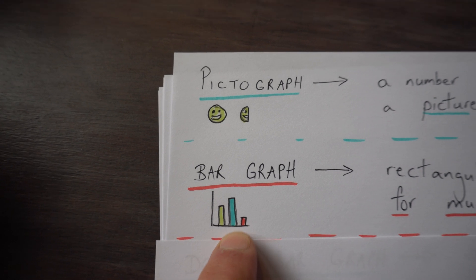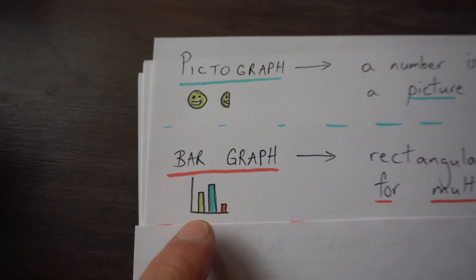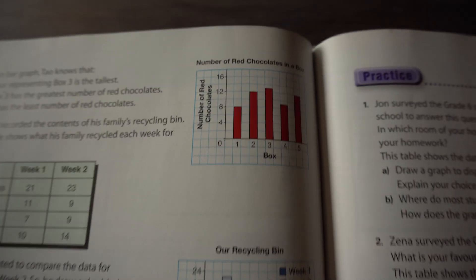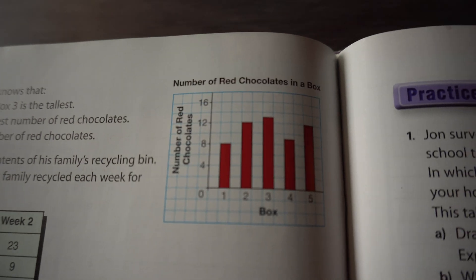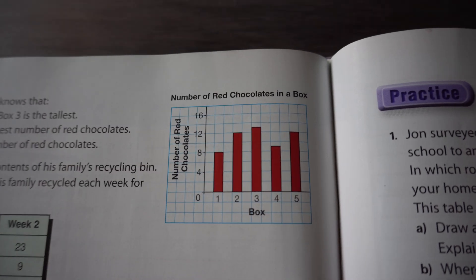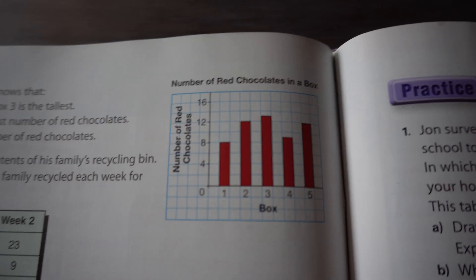It shows quickly and compares the different data entries there. There's an example of one in your book. It says number of red chocolates in a box and it has a different number of boxes. So look, it lets you compare multiple boxes at once. Isn't that special?